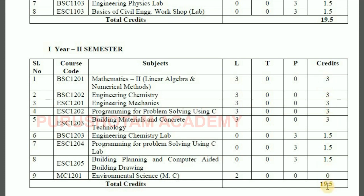The first year first semester is 19.5 credits and the second semester is also 19.5 credits, giving you a total of 39 credits for the first year. Completing these credits is essential for semester-to-semester and year-to-year promotion. Credits are very important, so you need to be careful about completing them.